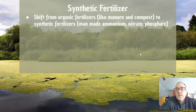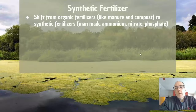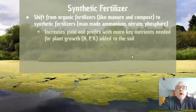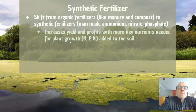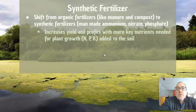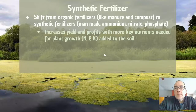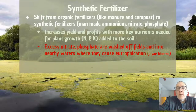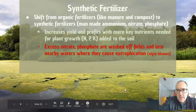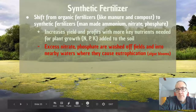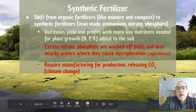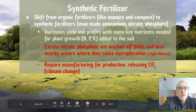Synthetic fertilizers are another component. We talked about the nutrient cycle — nitrogen, phosphorus — and how we've gone from using manure and compost to man-made fertilizers. This lets you precisely dial in exactly the nutrient content — the amount of nitrogen, phosphorus, and potassium added to the soil. However, a big negative is that excess nitrate and phosphate can end up in waterways like the Yahara River and our Yahara Lakes, where it can cause algae blooms and eutrophication. It also requires lots of manufacturing, releasing CO2 from all the mechanization and machinery needed to produce it.